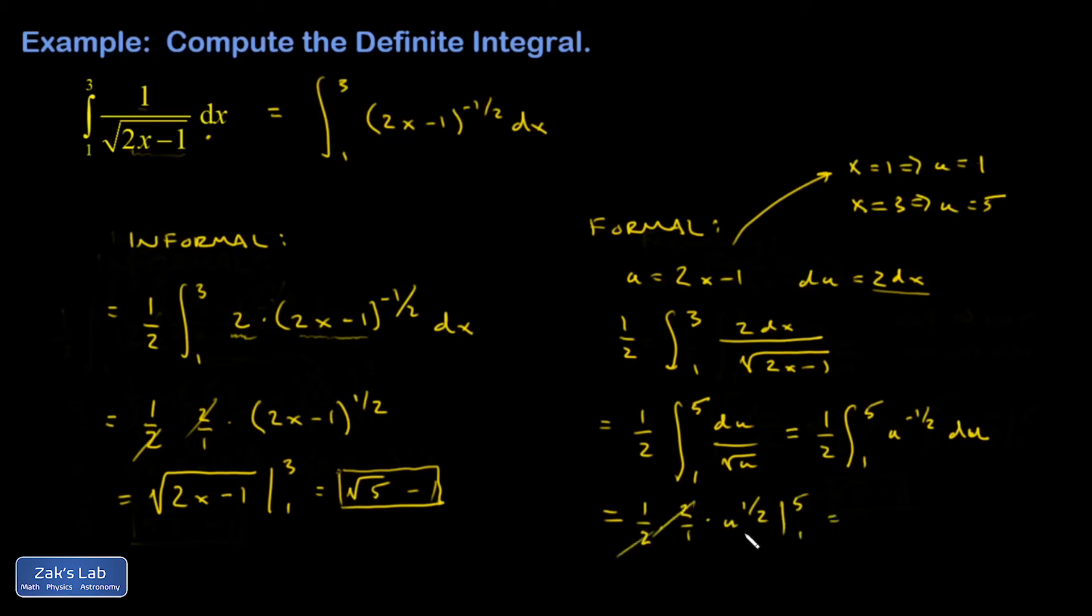All right. These 2's cancel. And I get 5 to the 1 half, which is root 5 minus 1 to the 1 half, which is 1. And I get the same answer that way.